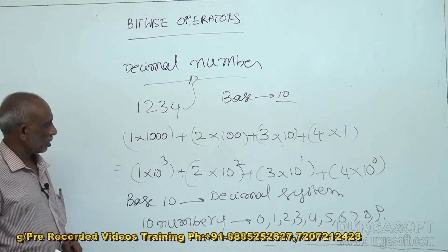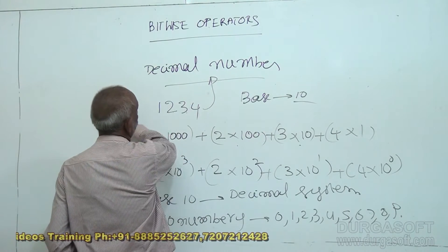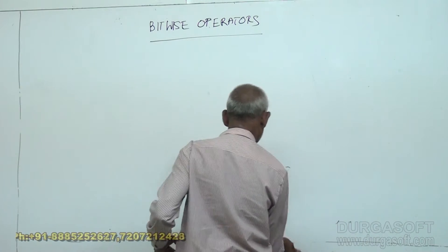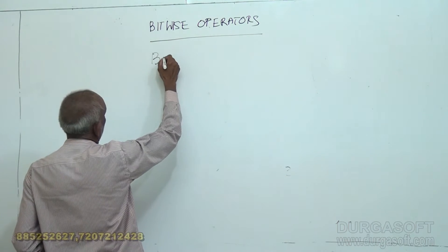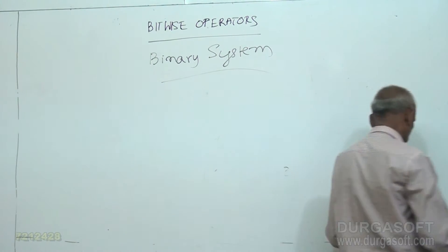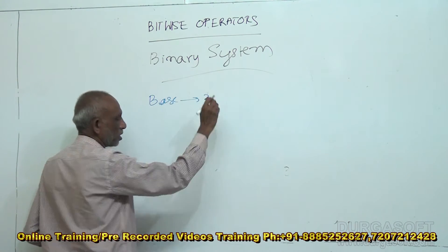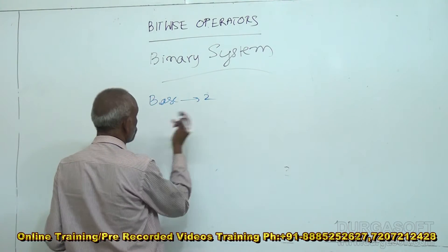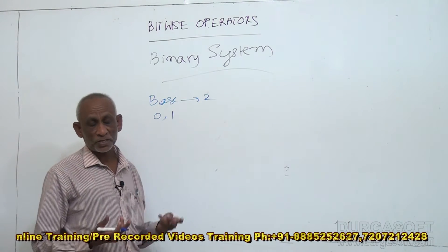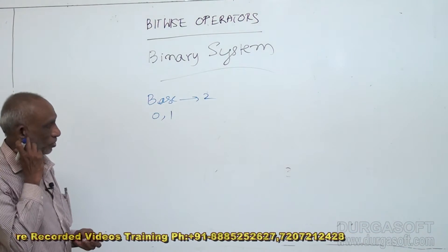Now let us see about the binary system. Binary system means base 2. In the binary system, the base is 2, so it has two numbers: 0 and 1. In the decimal system, we have digits from 0 to 9, any digit you can have, whereas here there are only two digits — 0 and 1. So any number in the binary system has only 0s and 1s.